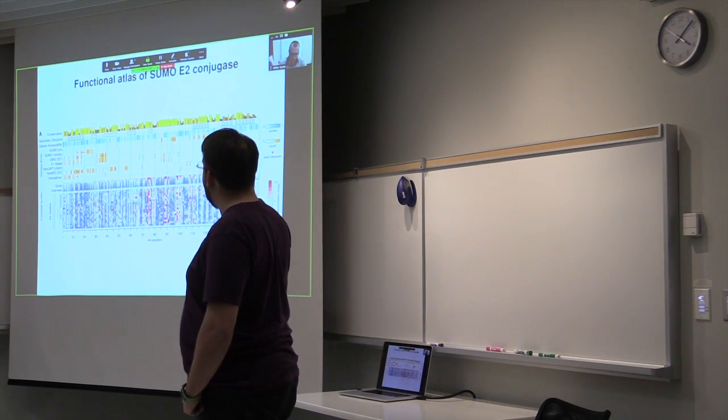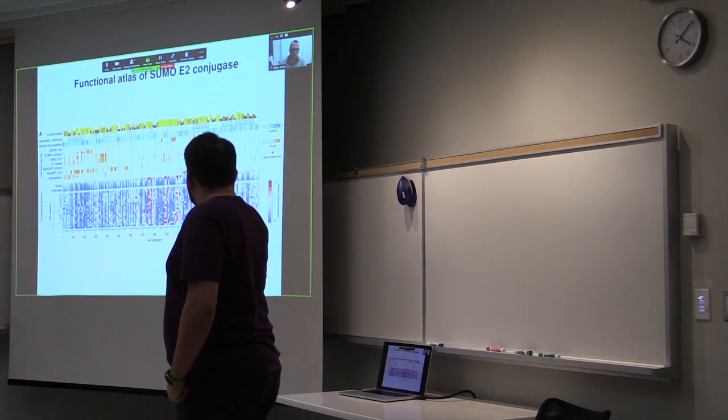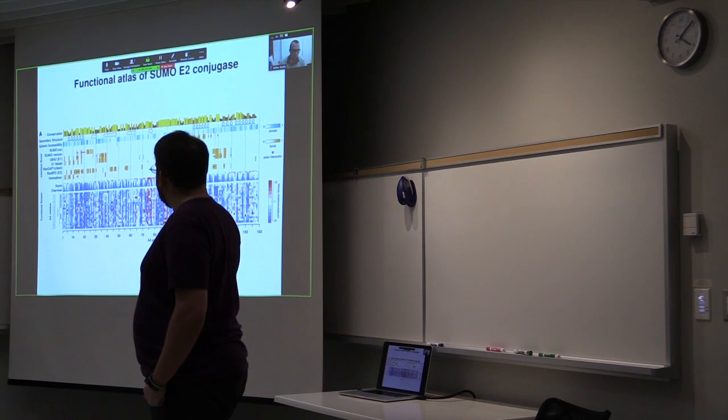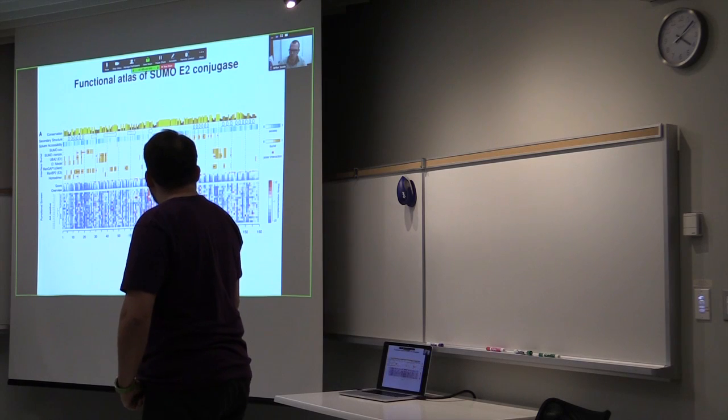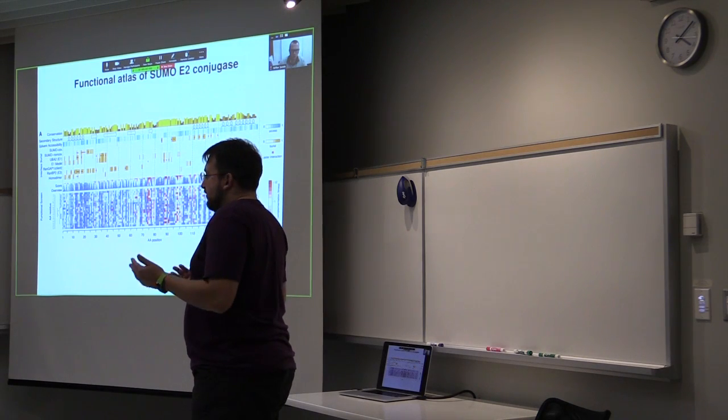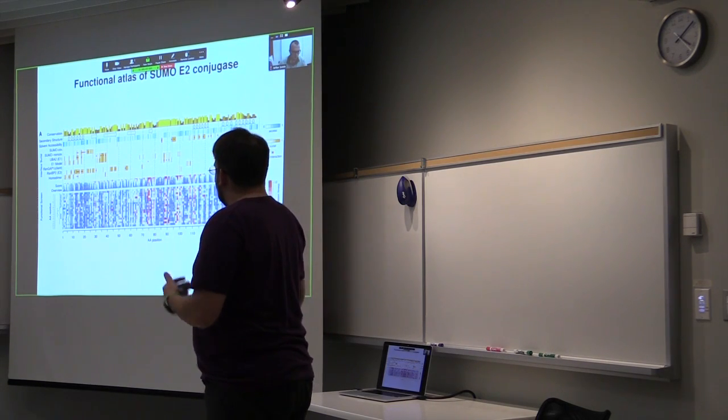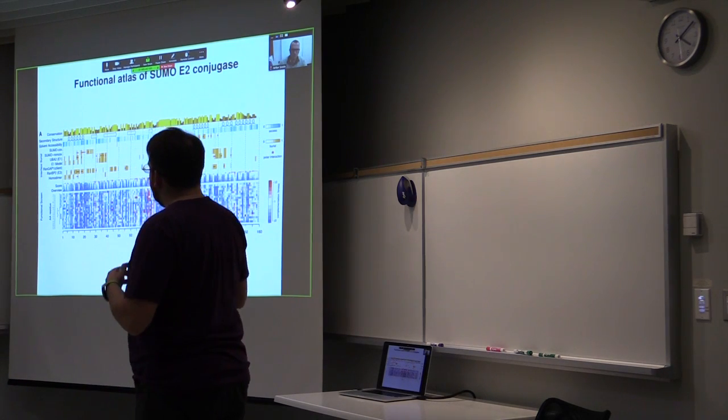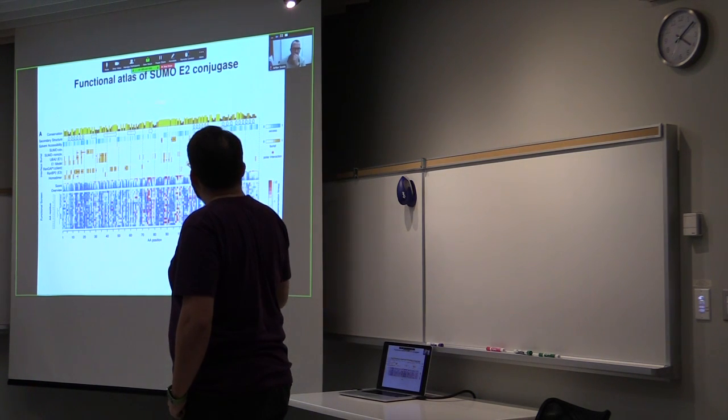And this is the first map that we generated with this method, which is for the UBE2I conjugation enzyme. On the x-axis, I'm showing all possible positions across the protein, all possible amino acid positions. And on the y-axis, all the amino acid residues that could be sitting there if we were to perform that mutation. And then the color in the heat map represents the effect of the mutation. White would be no effect, so it behaves like wild-type, blue would be deleterious, and red would be an increase in function over the wild-type performance. And on top, I'm showing for reference various different protein interaction interfaces, solvent accessibility in blue here, and evolutionary conservation.